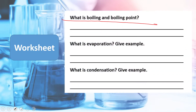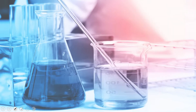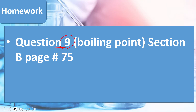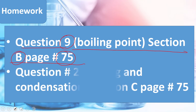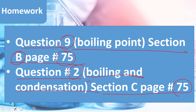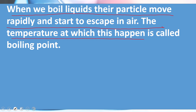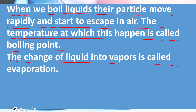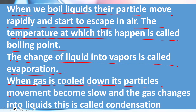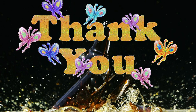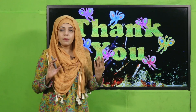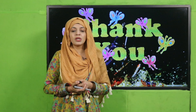What is boiling point? What is evaporation — give an example. What is condensation — give an example. My dear students, you will complete the worksheet and the homework for today is question number 9, boiling point, section B, page number 75, and also question number 2, boiling and condensation, section C, page number 75. Today we have learned that when we boil liquids, particles move rapidly and escape into the air — the temperature at which this happens is called the boiling point. The change of liquid into vapors is called evaporation. When gas is cooled down, its particles slow and it changes into liquid — this is called condensation. Aaj humne boiling aur condensation padhi. Keep everybody around you safe, have a good day, thank you so much.